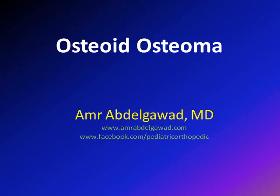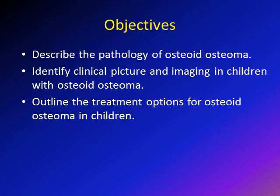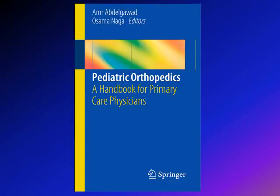Hi, this is Amr Abdigawad and we're going to speak today about osteoid osteoma. The objectives of this lecture are: first, to describe the pathology of osteoid osteoma, then to speak about the clinical picture and imaging of osteoid osteoma in children — including X-ray, CT, bone scan, and MRI — and then to speak about the treatment options. A good source you can use is a book written by myself and Dr. Naga.